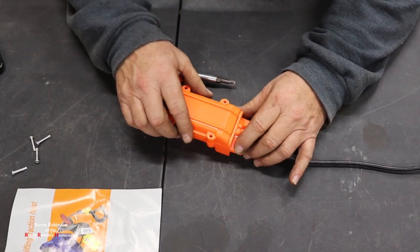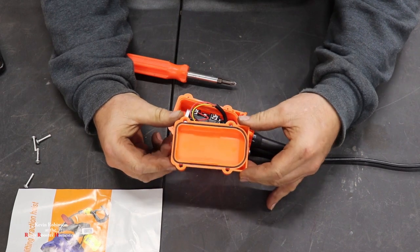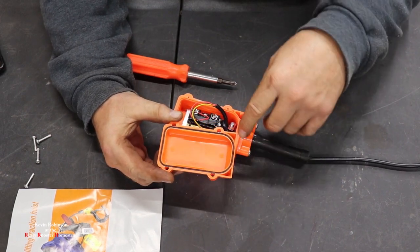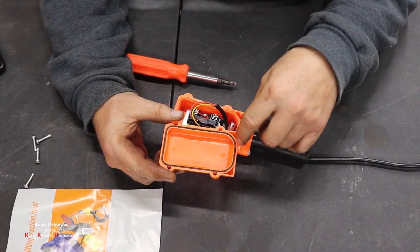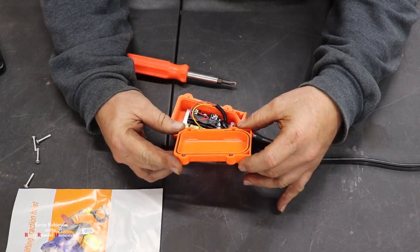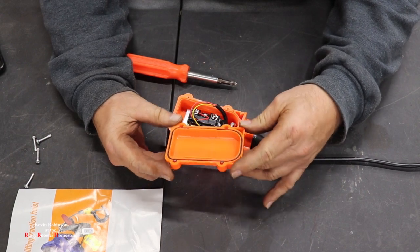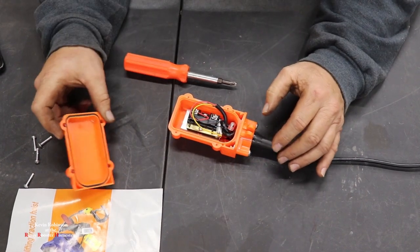So once you've got your screws out, we'll pull the back off. Now it looks like this switch itself is waterproof. It has a rubber seal on it. Maybe in case you drop it in a box of oil or a bucket of water, it wouldn't get any moisture inside of it.